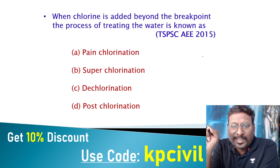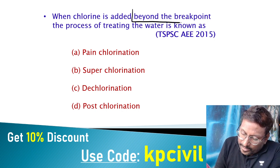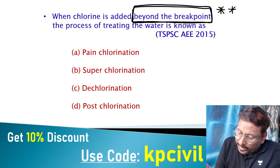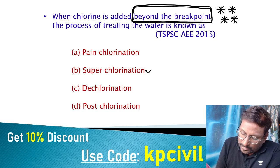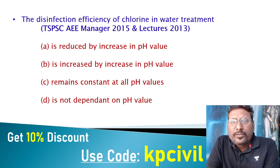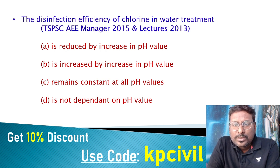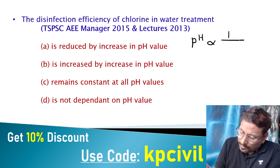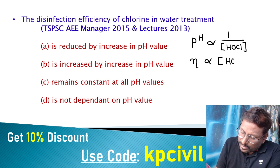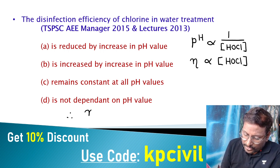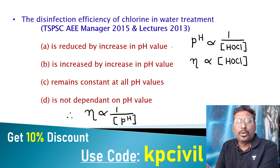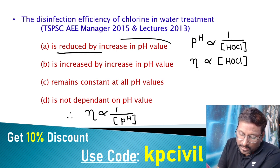When chlorine is added beyond the breakpoint, the process of treating water is called super chlorination — this is very important and frequently asked. Put a star mark on it. Disinfection efficiency of chlorine with respect to pH: as pH of water increases, concentration of HOCl decreases, and since efficiency is directly proportional to HOCl, efficiency decreases with increasing pH. So disinfection efficiency is reduced by increased pH value.